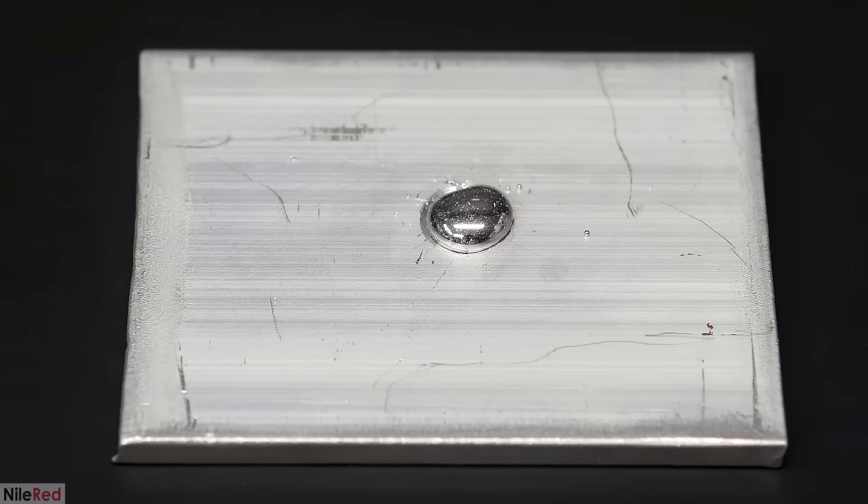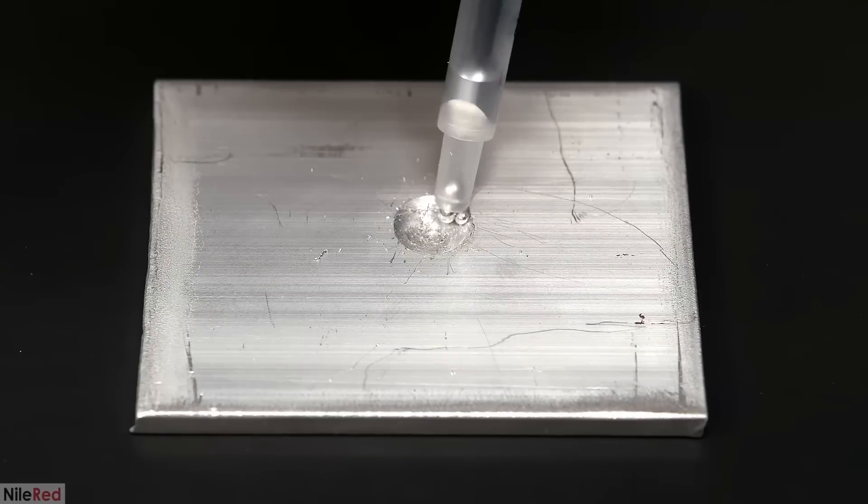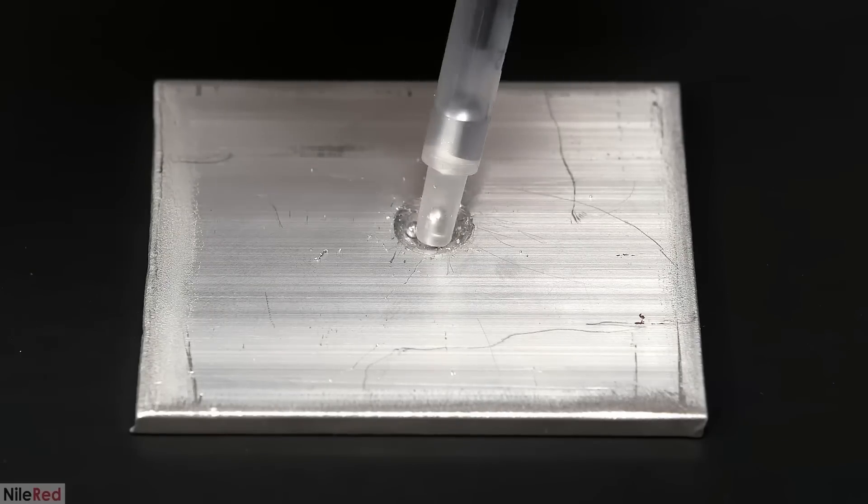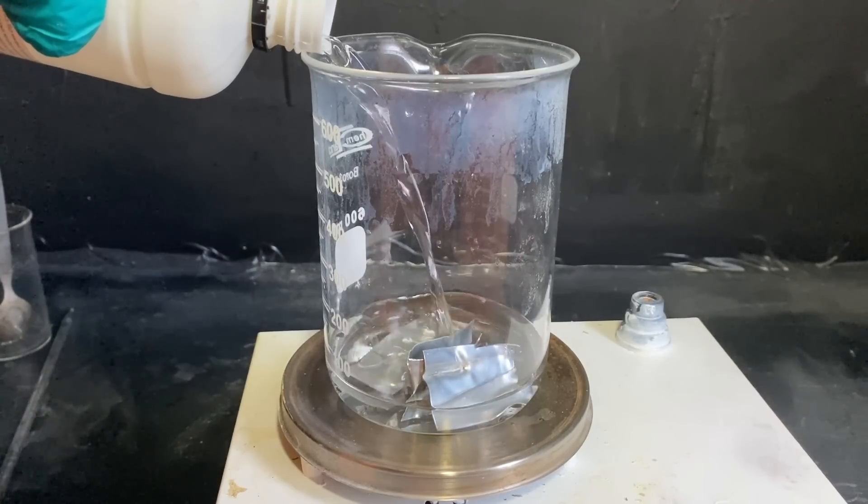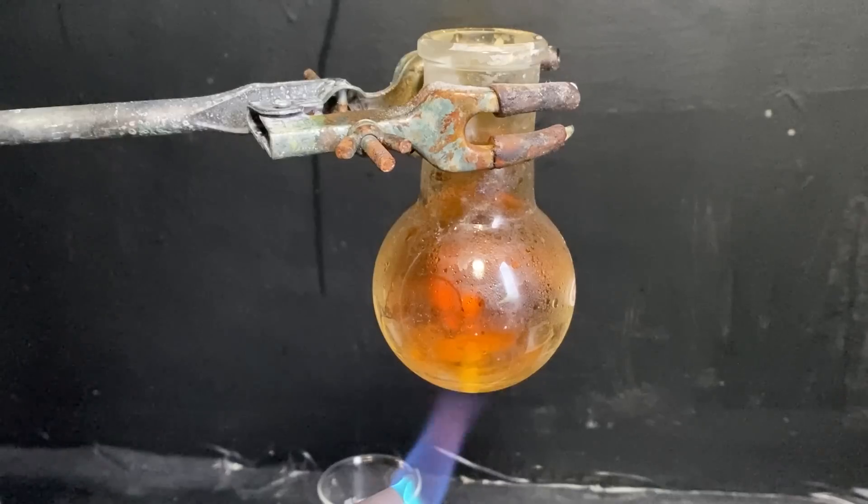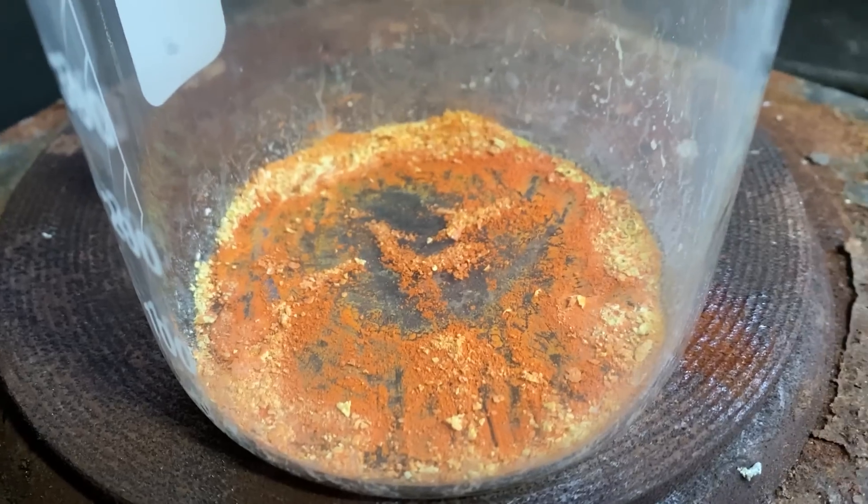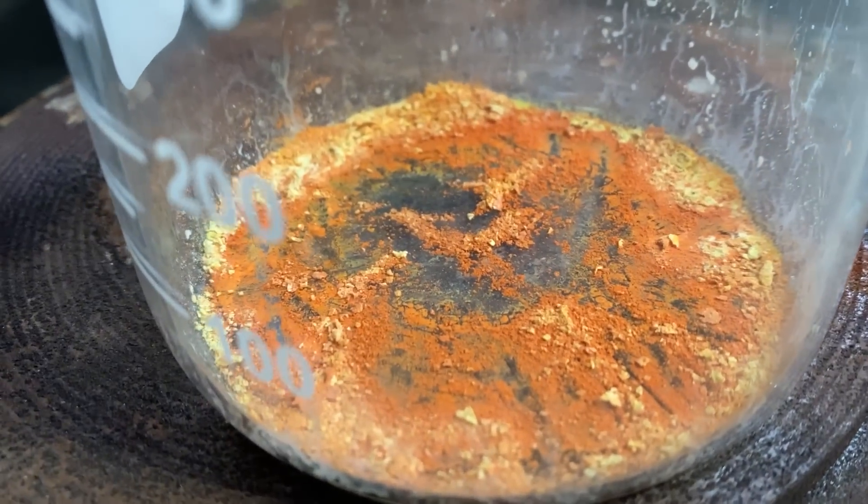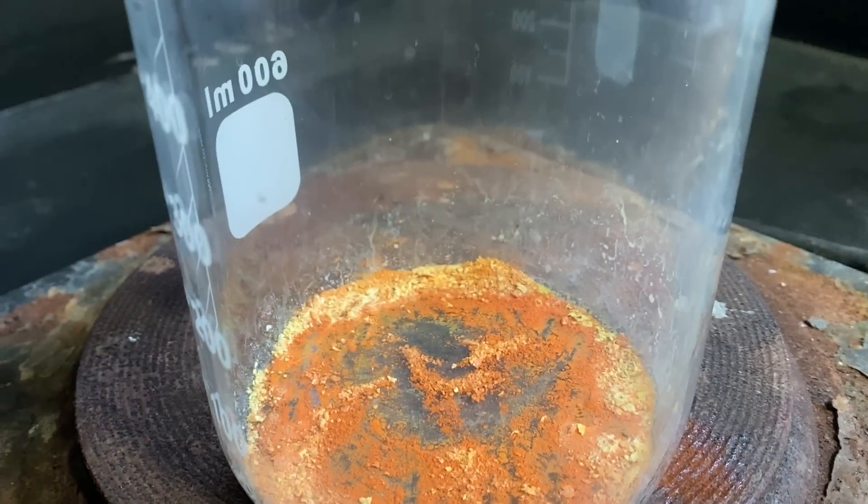You see, amalgams can either be prepared by dropping metallic mercury onto a metal, but that can be inefficient due to how mercury usually is. So it's sometimes better to just make a mercury chloride solution and then marinate the metal in it. Due to that, I'll first have to make some mercury chloride. This process actually deserves a video of its own. And if you'd like to see it, make sure to like and subscribe.